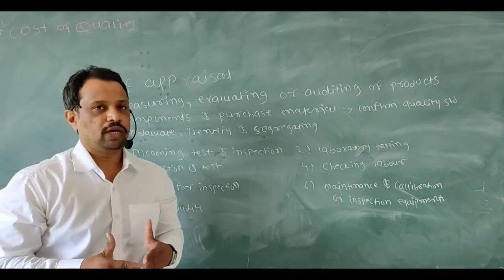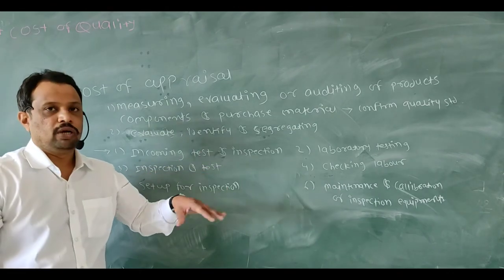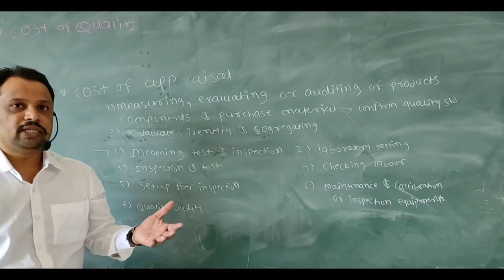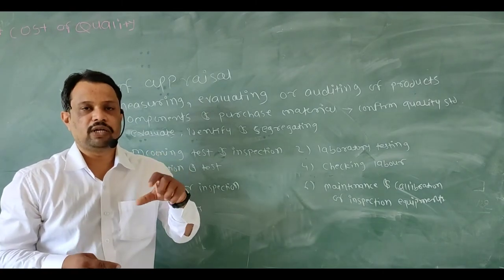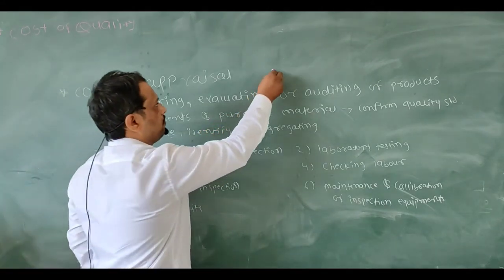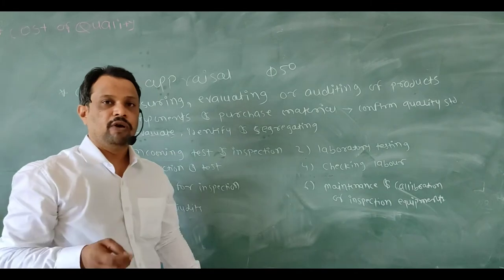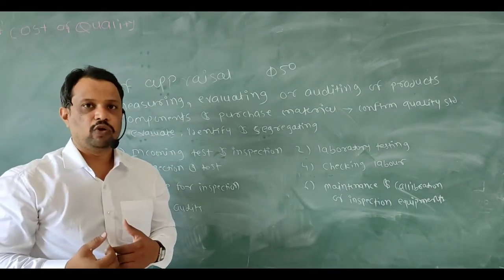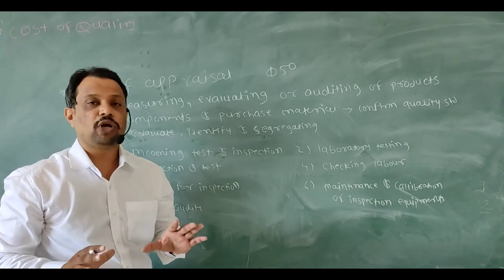It includes incoming test and inspection. If any material is receiving in your company, you have to check that material, whether size of diameter, consider that you are receiving a rod of diameter of 50 mm. When that material came in your company, you have to check whether your incoming dimensions are OK or not.